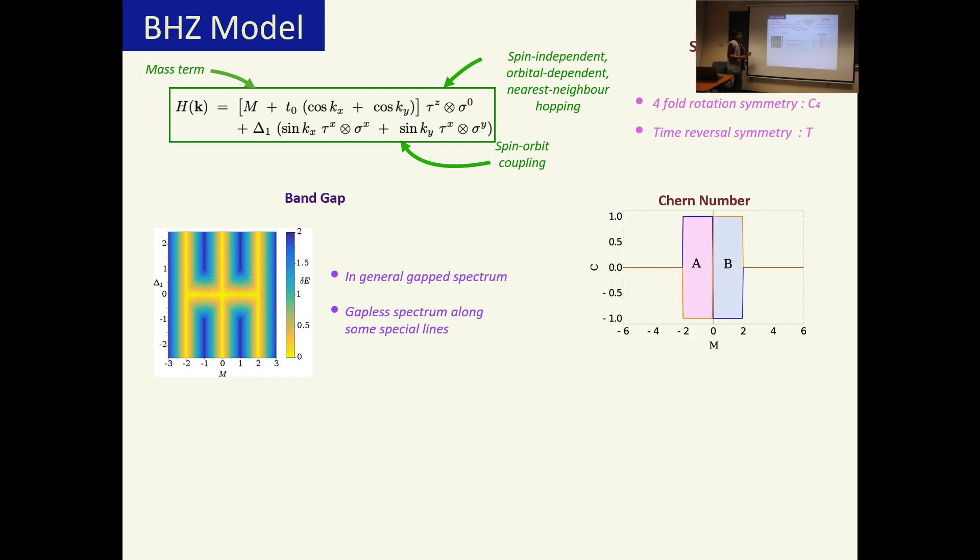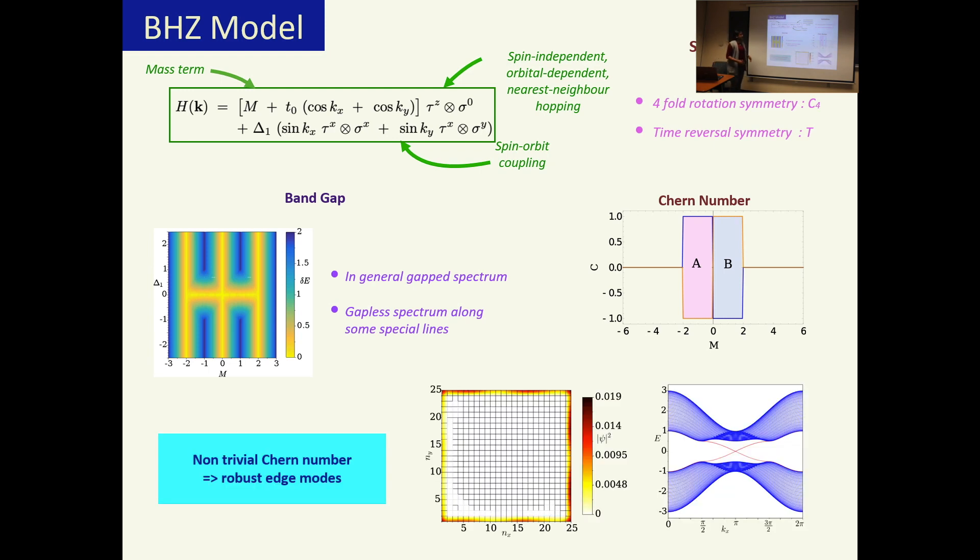Now since the spectrum is gapped we can calculate the Chern number. As we scan along this axis while fixing delta 1, we find that the Chern number goes from minus 1 in this region to plus 1 in this region for one of the bands, and it's opposite for the other band. So clearly this system has non-trivial topology and this means that it has robust edge modes, which can be seen by looking at a narrow ribbon of this material. We can clearly see that there are edge modes and in a finite sample these edge modes go all the way around.